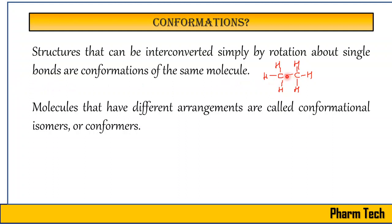We can define conformations as structures that can be inter-converted simply by rotation about a single bond. When we look at a number of structures obtained by single bond rotation, we are drawing the conformations of that molecule. Molecules that have different arrangements obtained this way are called conformational isomers.